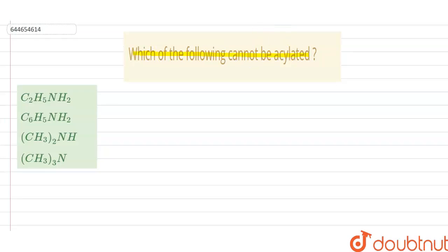of the following cannot be acylated? First of all, we have to know what is the meaning of acylation. Acylation is a process in which the acyl group, that is CH3-C=O group, is added to the